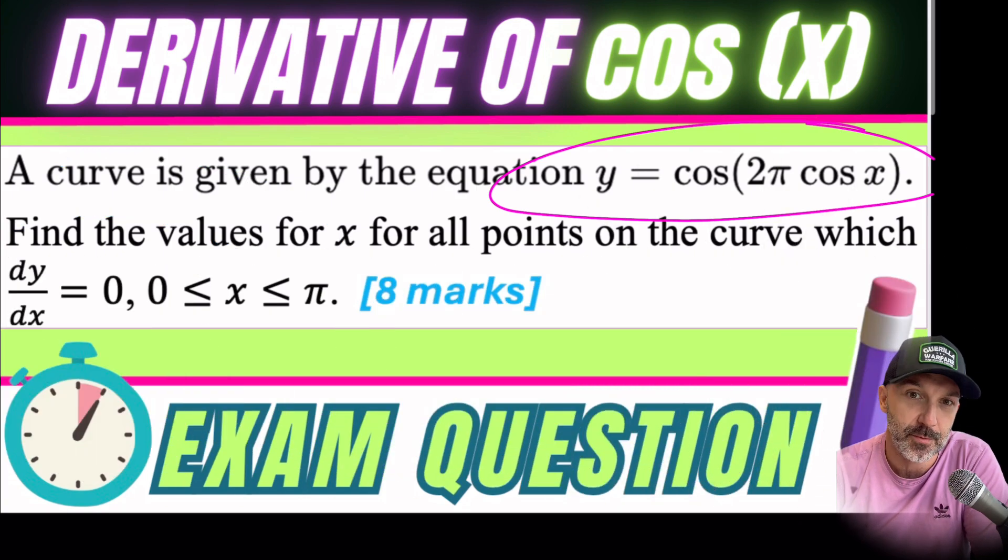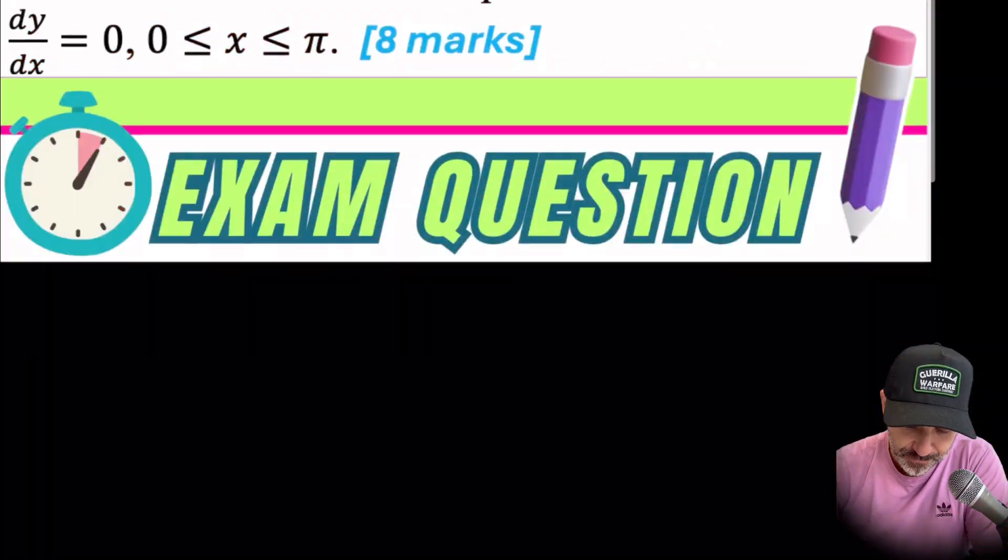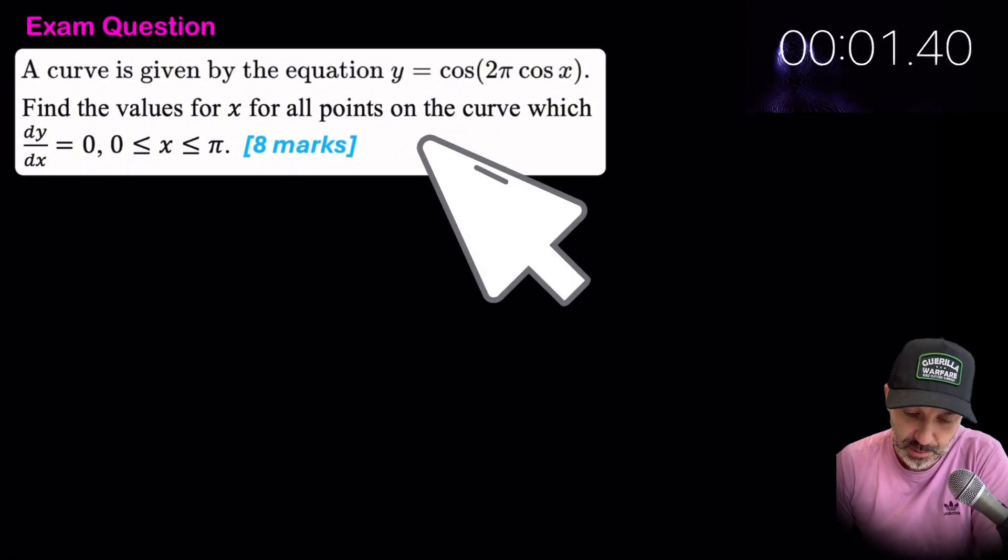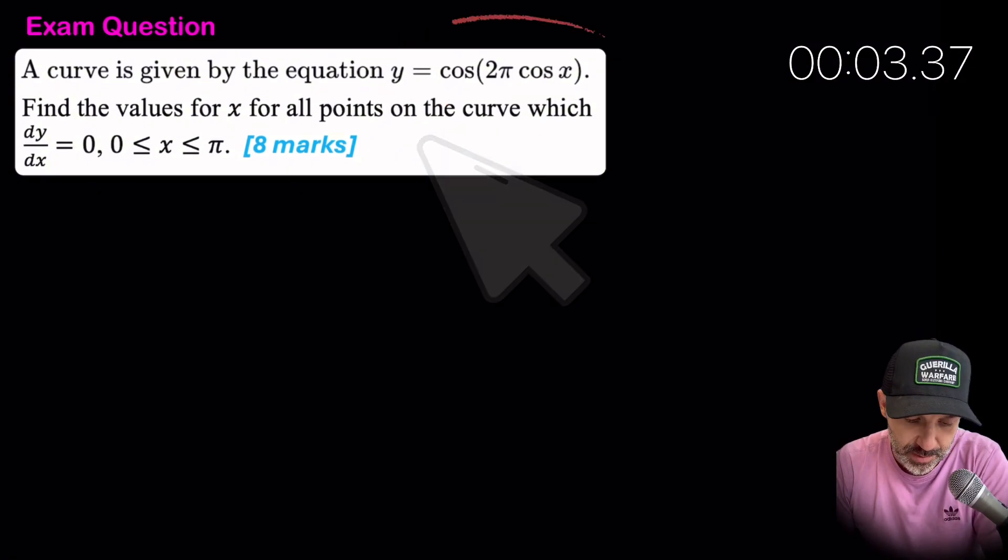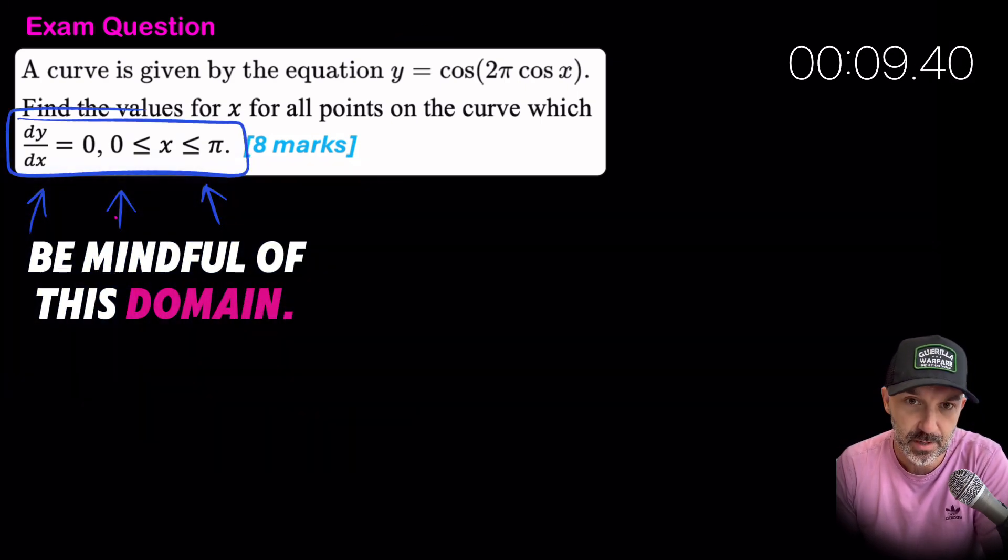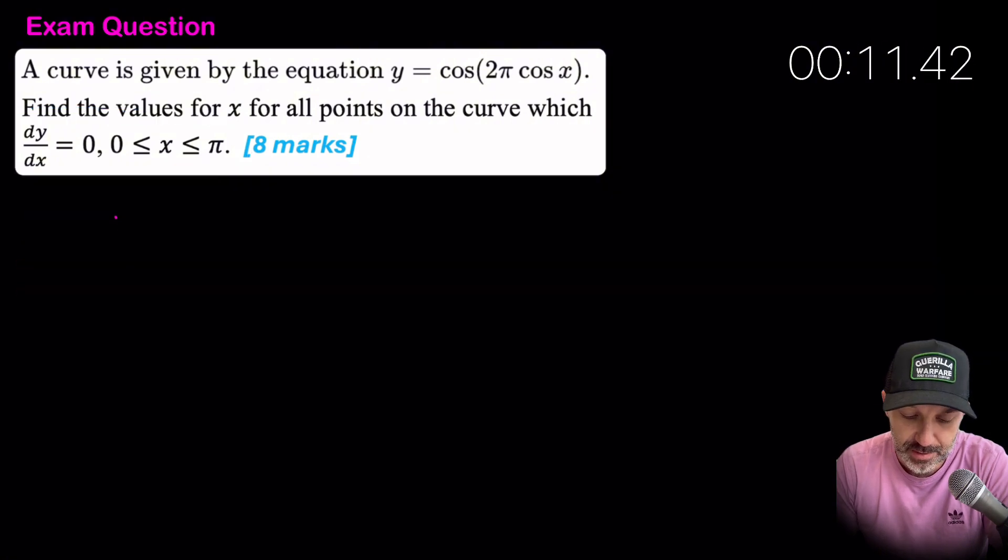Take a picture, try it yourself, and then we'll go through the solutions. Okay, start the clock. A curve is given by the equation y is equal to the following. Find the values of x for which all points on the curve where the derivative is equal to zero. So in other words, find where the gradient is equal to zero on this curve.